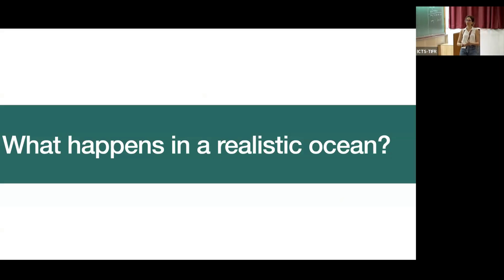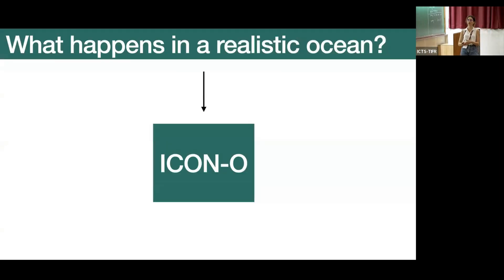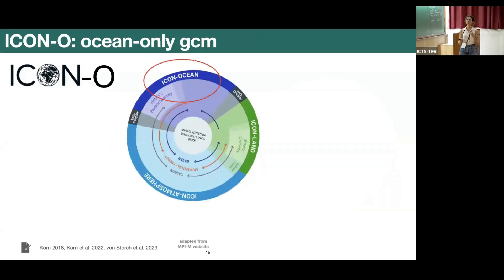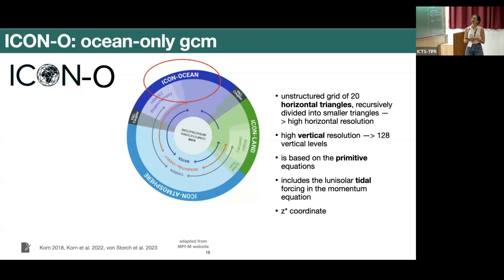This still doesn't answer what happens in a realistic ocean, which is what we are trying to do using ICON-O. Just a few words about ICON: it is a new generation Earth system model developed at the Max Planck Institute, based on an icosahedral triangular grid of 20 triangles. It has ocean, land, and atmosphere components which can be run coupled or separately. We run the ocean-only component at very high horizontal resolution, with very high vertical resolution, solving the primitive equations and including the lunisolar tide in the momentum equation to resolve the barotropic tide.